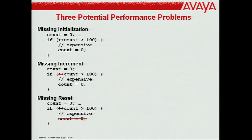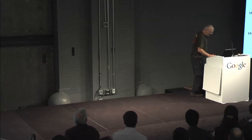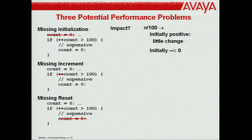What happens if you forget to initialize count to zero? It depends on the language. If count is implicitly zero, you're fine. If it's some garbage value like 138, you do that one extra time and then you're fine. The real bummer: if count is a really small negative number, you could never reach the threshold — something you wanted to happen 1% of the time never happens. If you miss the increment, you'll never do it. If you miss the reset, instead of doing it 1-in-100 times, you'll do it all but 100 times.